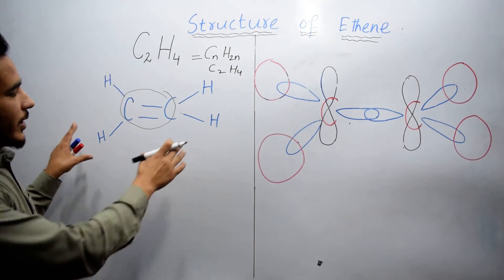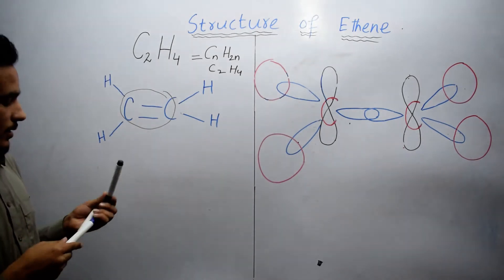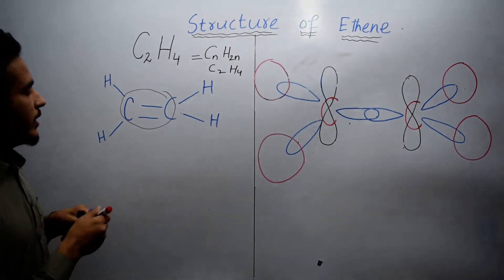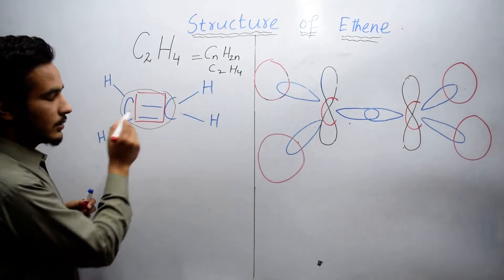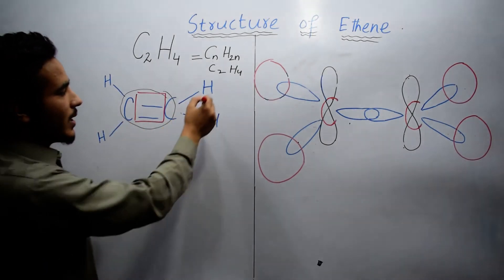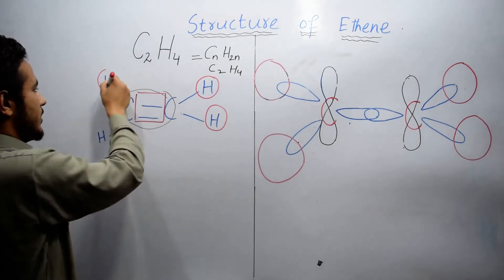Here we have the general structure of ethene. There is a double bond that exists between 2 carbon atoms, and each carbon is bonded with 2 hydrogen atoms, as you can see.